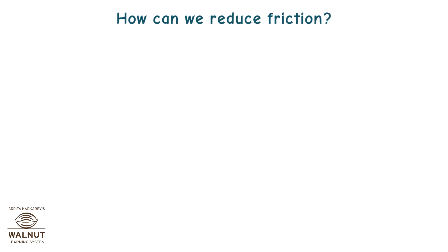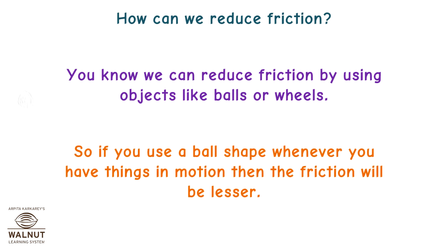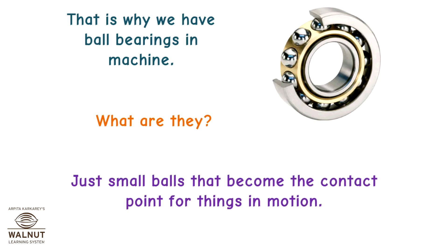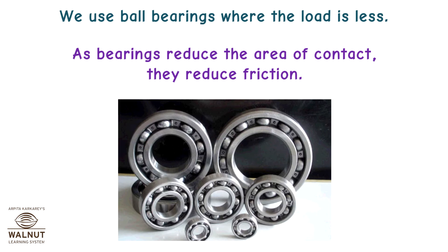How can we reduce friction? We can reduce friction by using objects like balls or wheels. So if you use a ball shape whenever you have things in motion, the friction will be lesser. That is why we have ball bearings in machines — just small balls that become the contact point for things in motion. We use ball bearings where the load is less. As bearings reduce the area of contact, they reduce friction.